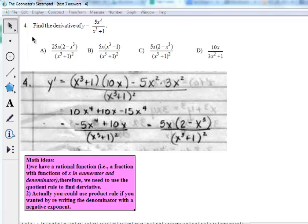This question number four asks us to find the derivative of the function, which is a rational function. That means it's a fraction that has two functions, one on the top and one on the bottom, both in terms of x.